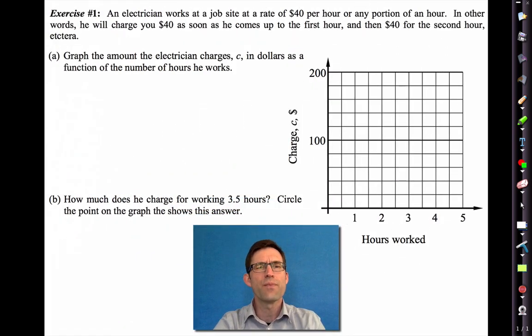So we're going to start actually with an applied example. Exercise 1 says an electrician works at a job site at a rate of $40 per hour or any portion of an hour. In other words, he will charge you $40 as soon as he comes up to the first hour, and then $40 for the second hour, etc. Letter A says, graph the amount the electrician charges in dollars as a function of the number of hours that he works. This is kind of cool.